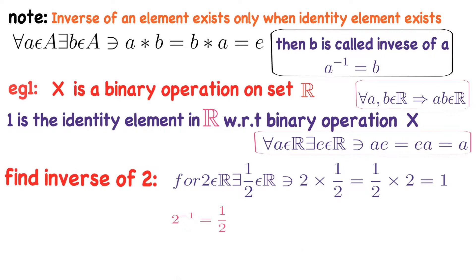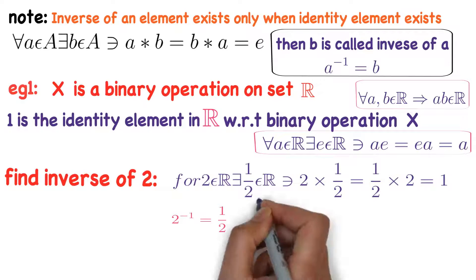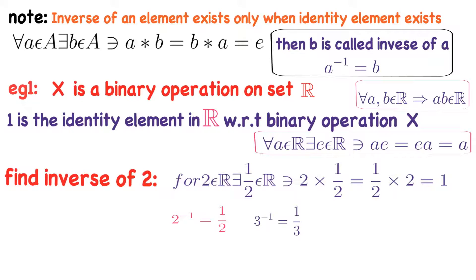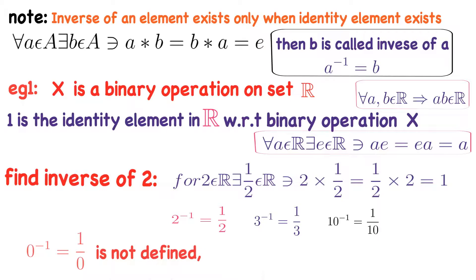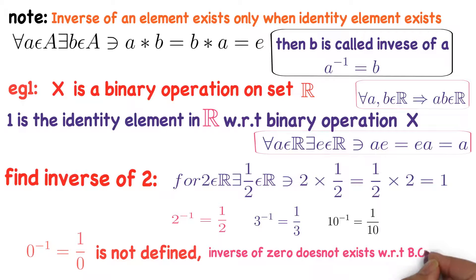In the same way, 10 inverse equals 1/10. Now, what is 0 inverse? It would be 1/0, but 1/0 is not a real number — it is not defined. So the inverse of 0 does not exist with respect to binary operation multiplication in ℝ.